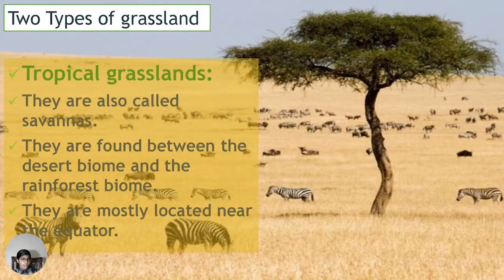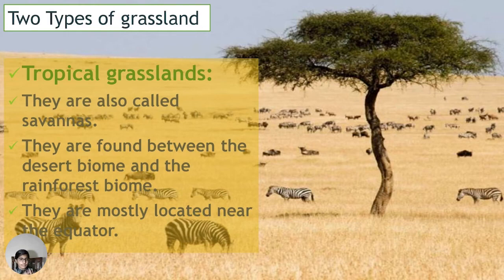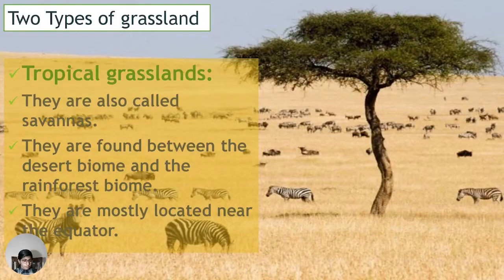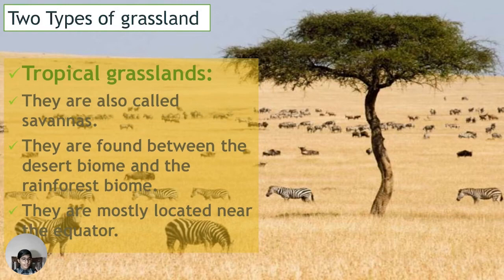The second type is tropical grassland, also called savanna. Savannas are found between the desert biome and the rainforest biome. They are located between these two biomes and are most commonly found near the equator.